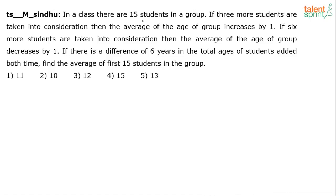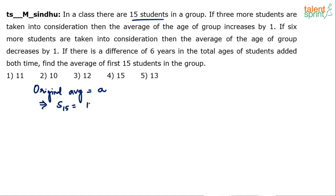I think this is an interesting one on averages. There are three different cases here. There are 15 students in a group — let's assume their average is 'a'. So the original average is 'a'. Can I say the sum of the ages of these 15 students is equal to 15 times a? Yes — you know that sum equals average times number of students. So sum of the ages of 15 students is 15a.